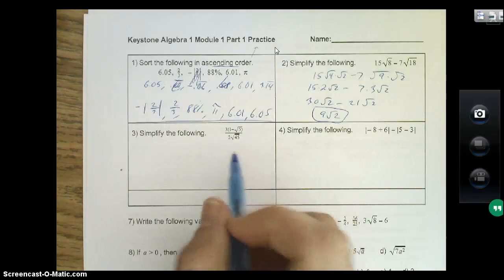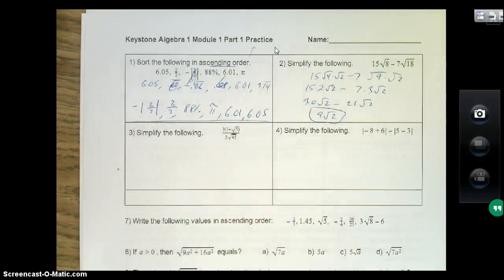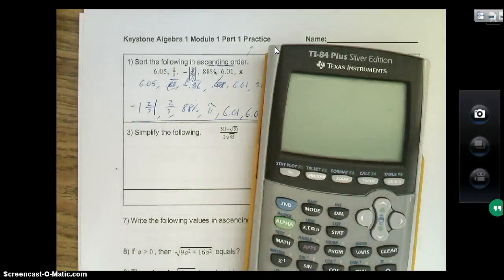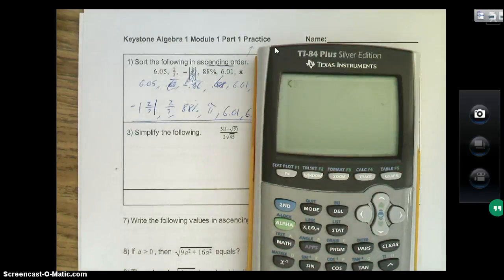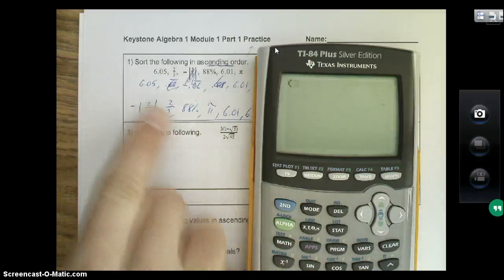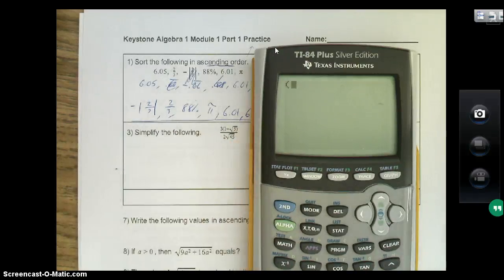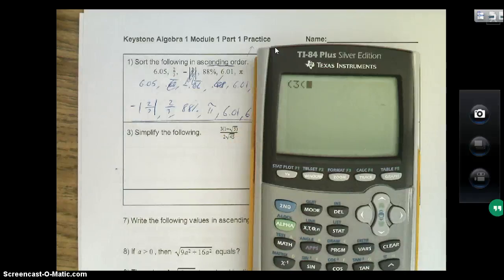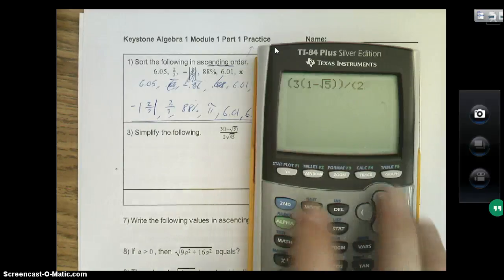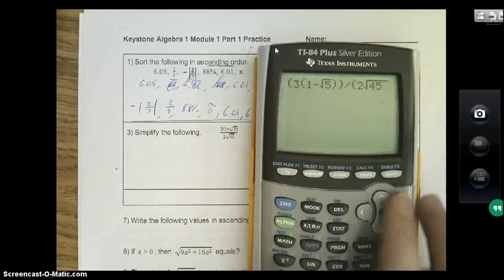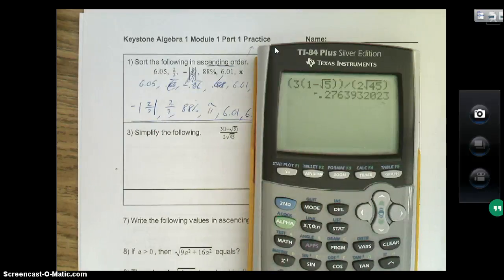Now for this one, just to show you guys a little side trick here: if you run into a problem like this, you're allowed to use the graphing calculator, use it. Really help yourself out. So up top, the numerator, I'm going to put parentheses, then 3 times parentheses 1 minus root 5, to the right, close it, close it, divided by parentheses 2 square root of 45 and close it.